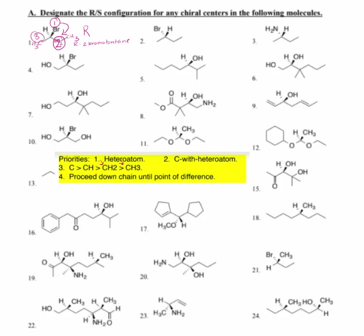For number two, this is also a 2-bromobutane. Bromine gets one, the ethyl side is number two, and the methyl side is number three. We can see that we are going to rotate clockwise, except hydrogen is coming out towards us this time. You can either memorize the rule that when hydrogen is to the rear and you turn to the right it's an R, and when hydrogen is coming out towards you turning to the right is an S — or you can put yourself behind the molecule. This is an S configuration: S 2-bromobutane.